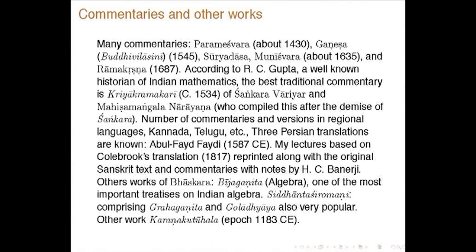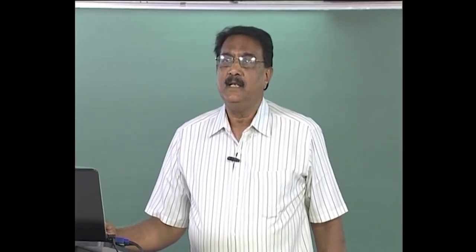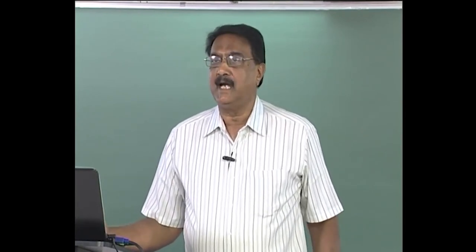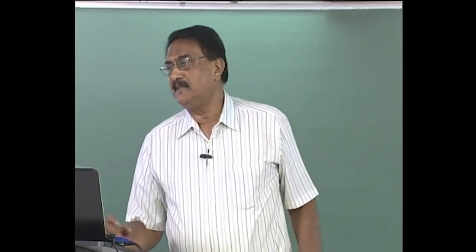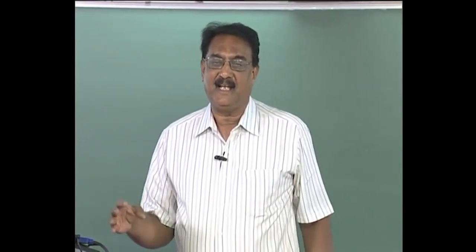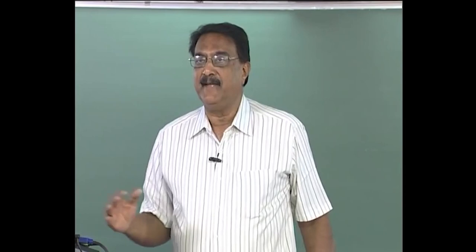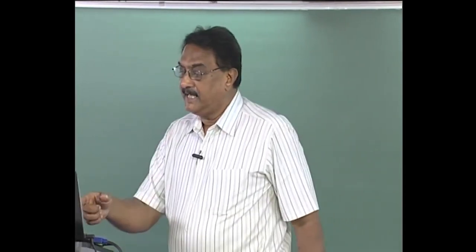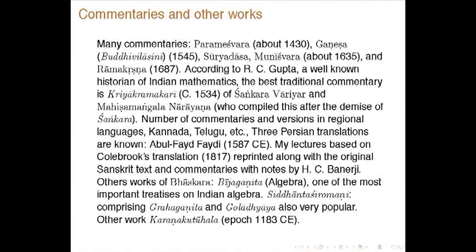Other works of Bhaskara include Bija Ganita, which is also a very famous work to be discussed later in this lecture series, and Siddhanta Shiromani comprising two parts called Graha Ganita and Goladhyaya — sometimes described as four parts including Leelavati and Bija Ganita. There is another work called Karana Kutuhala where he makes corrections to the parameters for the planets, composed around 1183 CE.